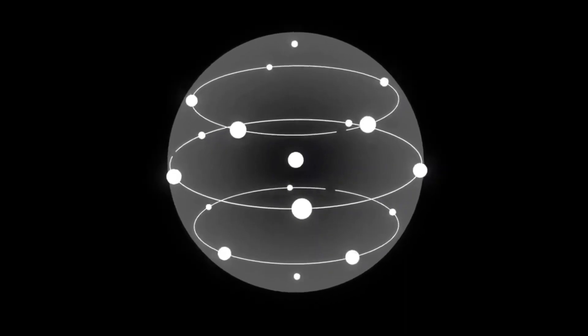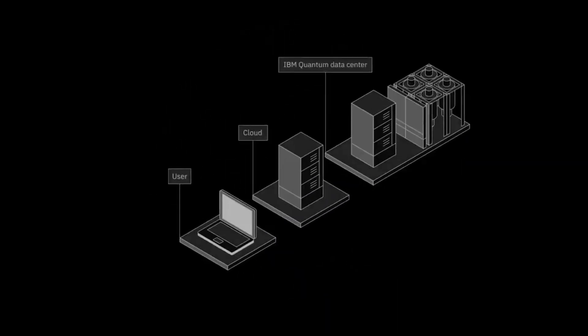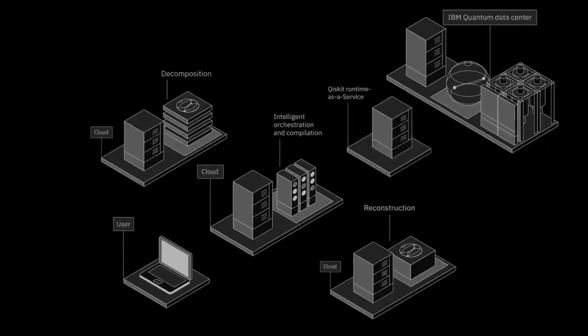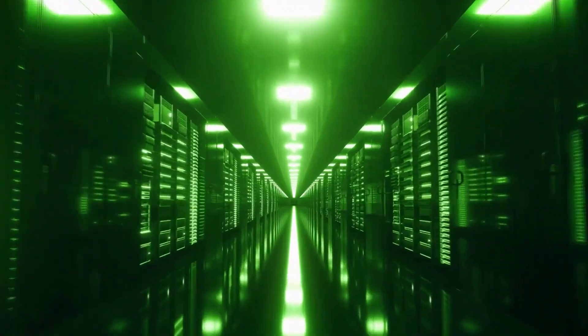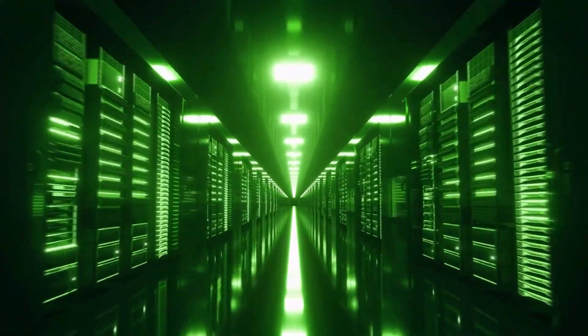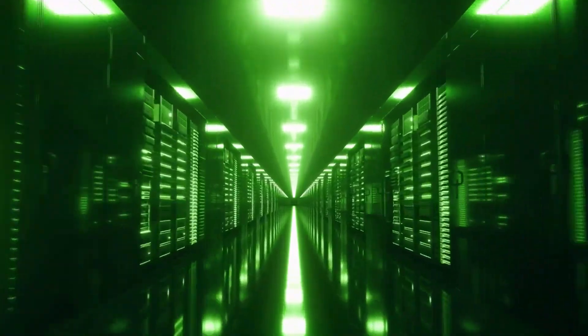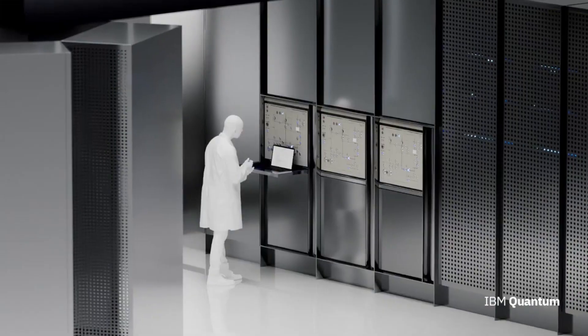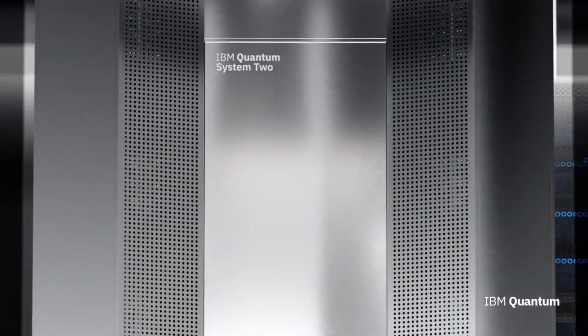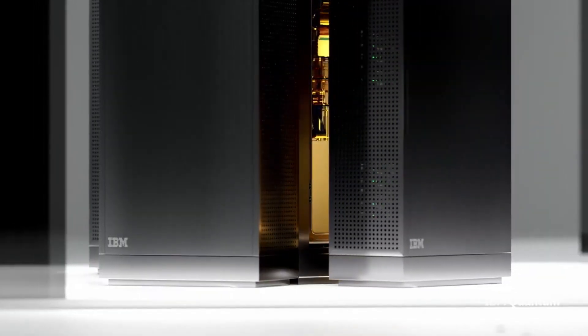Boson sampling is a method that uses light particles, or photons, to do calculations. The process starts by sending photons into a complex network of devices that split and reflect light, known as an optical circuit or a photonic quantum circuit. As the photons travel through this maze-like circuit, they interact with the light splitters and mirrors in ways defined by quantum mechanics rules.